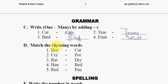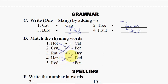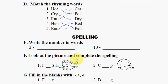Next is match the rhyming words. For example: hot matches with pot, cry matches with dry, cat — and hen matches with pen, red matches with bed. In this manner, the student will match the rhyming words.